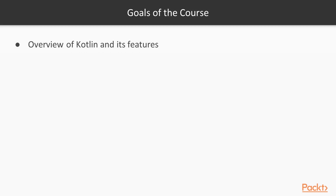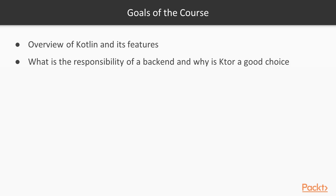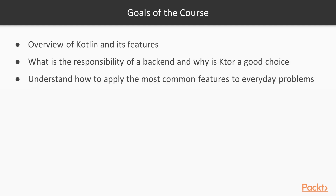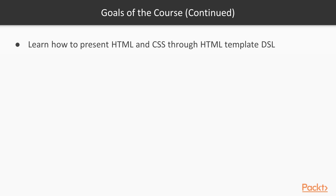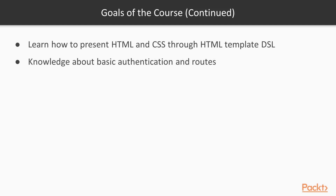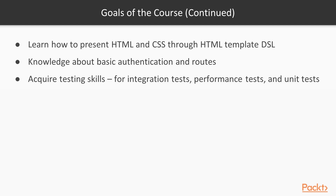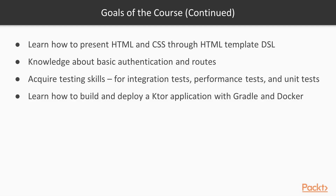What are the course goals? First, we need to get an overview of Kotlin and all of its features. We would like to know the responsibility of a backend and why Ktor is a good choice. We want to understand how to apply the most common features to everyday problems, and get hands-on experience with Ktor through a bookstore application. We will learn techniques for creating a REST API, presenting HTML and CSS through templating and DSLs, basic authentication and routes, testing skills for integration, performance, and unit tests, and how to build and deploy a Ktor application with Gradle and Docker.